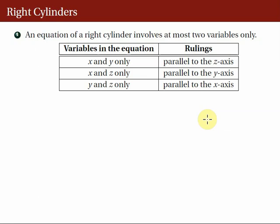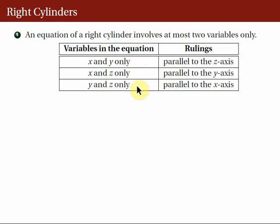Some remarks on right cylinders. First, it is easy to identify when the graph of an equation is a right cylinder. An equation of a right cylinder involves at most two variables only. So if the variables in the equation are x and y only, then its graph is a right cylinder whose rulings are parallel to the z-axis, the axis of the missing variable. If the variables in the equation are x and z only, then its graph is a right cylinder whose rulings are parallel to the y-axis. Finally, if the variables in the equation are y and z only, then its graph is a right cylinder whose rulings are parallel to the x-axis, the axis of the missing variable.